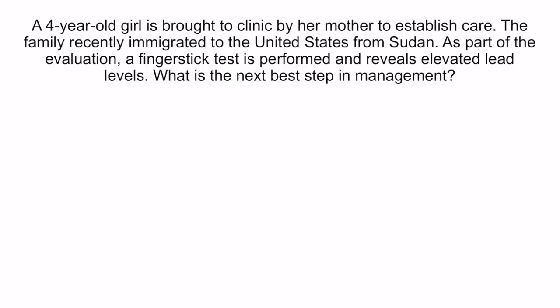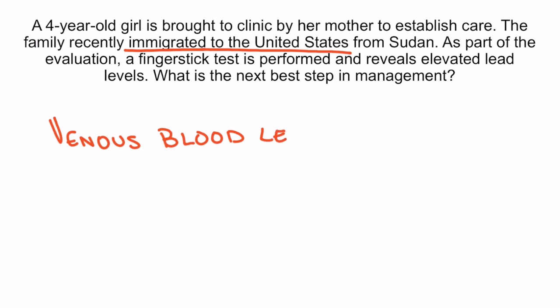Practice question: A four-year-old girl is brought to the clinic by her mother to establish care. The family recently immigrated to the United States from Sudan. A finger stick test is performed and reveals elevated lead levels. The child is at risk for lead poisoning due to recent immigration, which is why a screening finger stick test was ordered. After the initial screening test is positive, the next best step is to order a venous blood level to confirm the elevated lead level and determine appropriate treatment based on the level of abnormality.